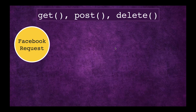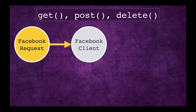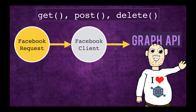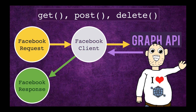So how does it work? All three of those methods do this: they generate a Facebook request entity, they send that entity to the Facebook client, the client will translate that into an HTTP request and send it to the Graph API. The Graph API sends back the response, the Facebook client does some processing, and then it ends up with a Facebook response entity. That's what you actually get back when you use these methods.